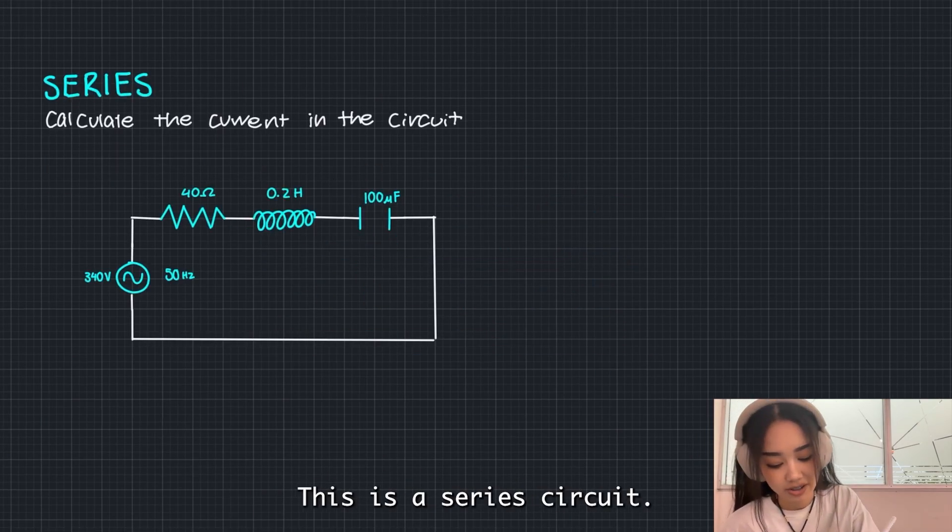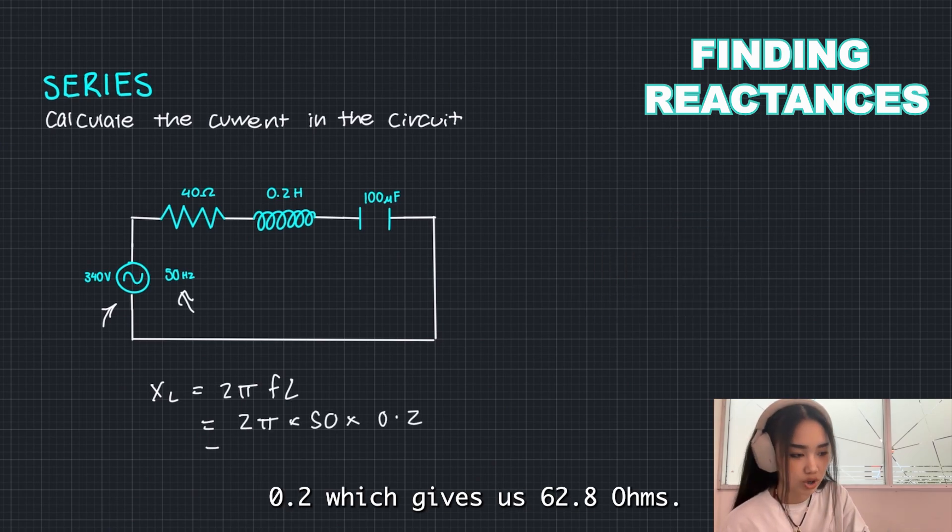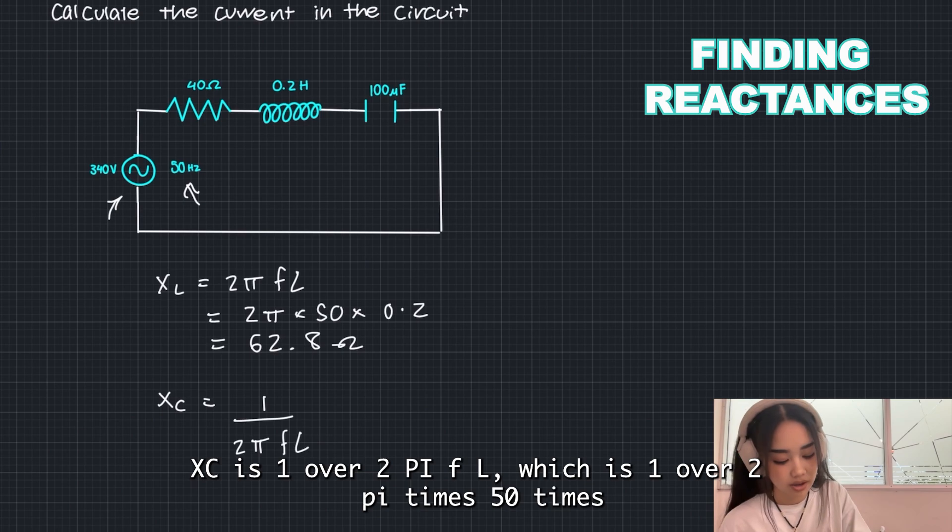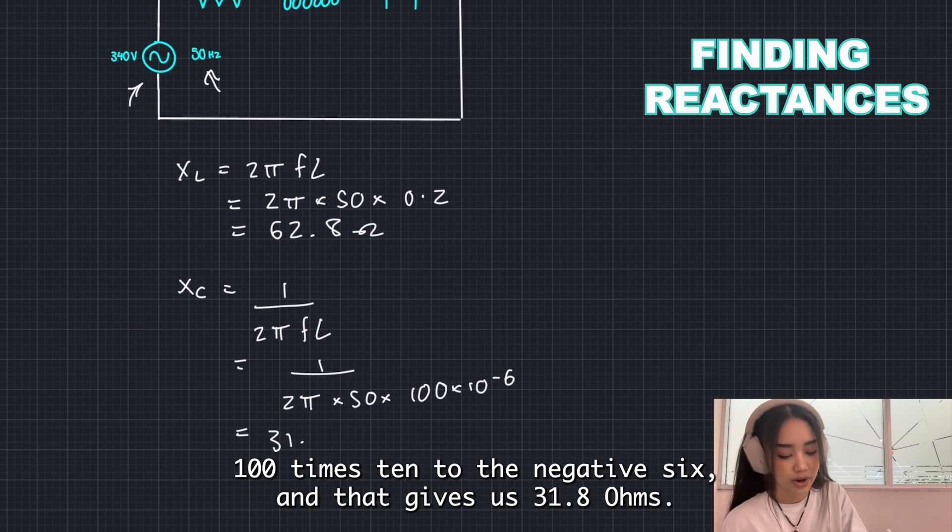This is a series circuit. Firstly, we need to find the reactance of the inductor. 2 pi times 50 times 0.2, which gives us 62.8 ohms. XC is 1 over 2 pi FL, which is 1 over 2 pi, times 50, times 100 times 10 to the negative 6. And that gives us 31.8 ohms.